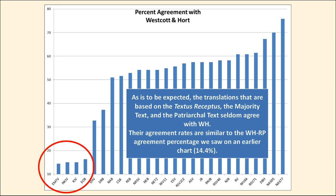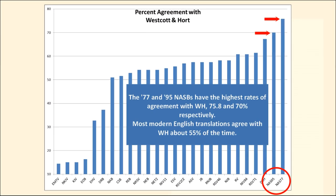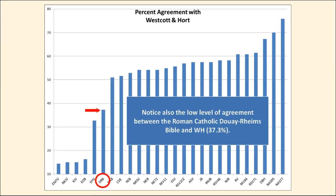The highest agreement rates with Westcott and Hort are for the 1977 and 1995 New American Standard Bibles, at 75.8% and 70% respectively. Notice the earlier NASB agrees with Westcott and Hort more frequently than the more modern NASB does. Most modern English translations agree with Westcott and Hort about 55% of the time, meaning they disagree 45% of the time. The Douay-Rheims Bible, the Roman Catholic Latin-based translation, has a Westcott and Hort agreement of 37.3%.